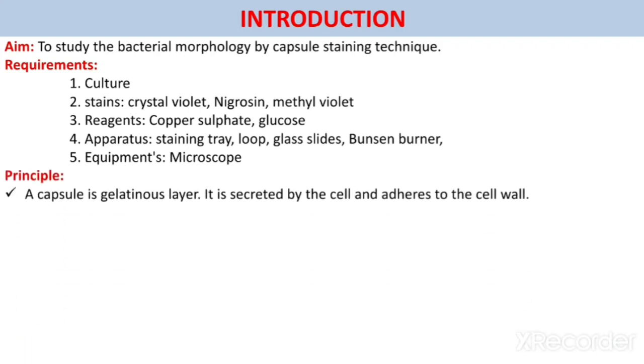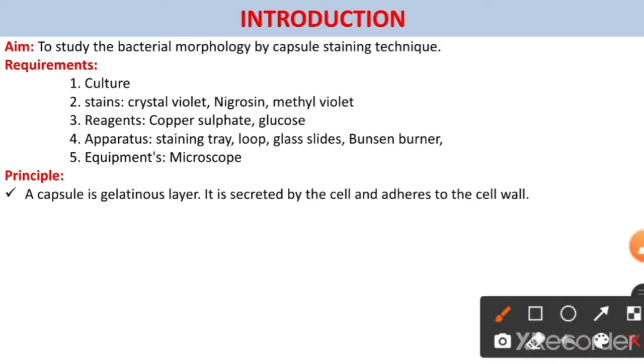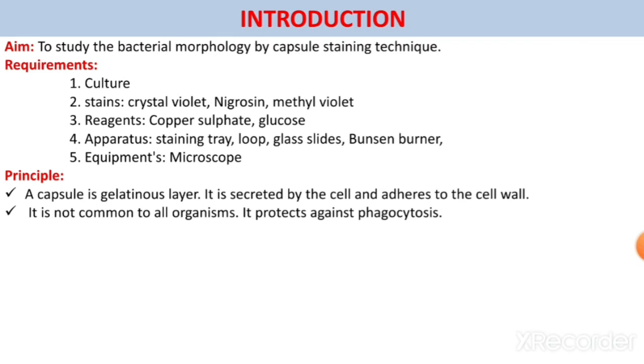Now the principle. A capsule is a gelatinous layer. It is secreted by the cell and adheres to the cell wall. It is not common to all organisms. It protects against phagocytosis. The capsular material is a polysaccharide, a glycoprotein, or a polypeptide.